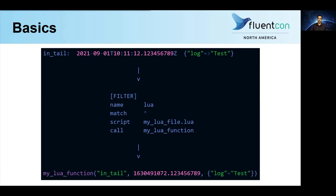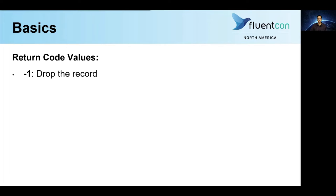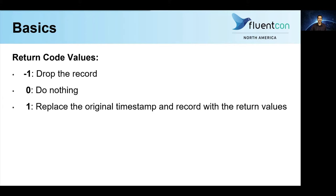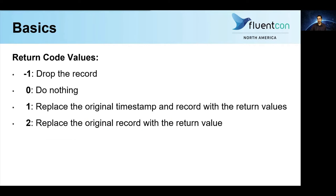This function also has a specific format when it comes to the return values. In particular, it always returns the following three values. Starting from the right, we have a Lua table representing a record, an epoch timestamp, and finally a return code. This return code is an integer which tells Fluent Bit what to do with the record that triggered this function call, and which effectively determines whether or not the other two return values play any role at all. Specifically, if the return code is -1, Fluent Bit drops the entire record. If it's 0, Fluent Bit does nothing. If it's 1, Fluent Bit replaces both the record timestamp and the record itself with the second and third return values from the function. And finally, if it's 2, Fluent Bit replaces only the record itself with the third return value from the function.